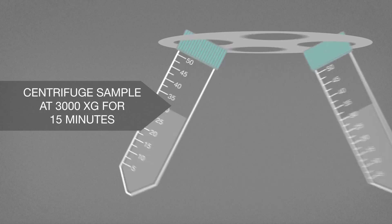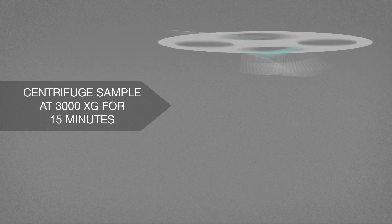Centrifuge the samples at 3000 XG for 15 minutes. Use a nomograph to convert RPM to XG.